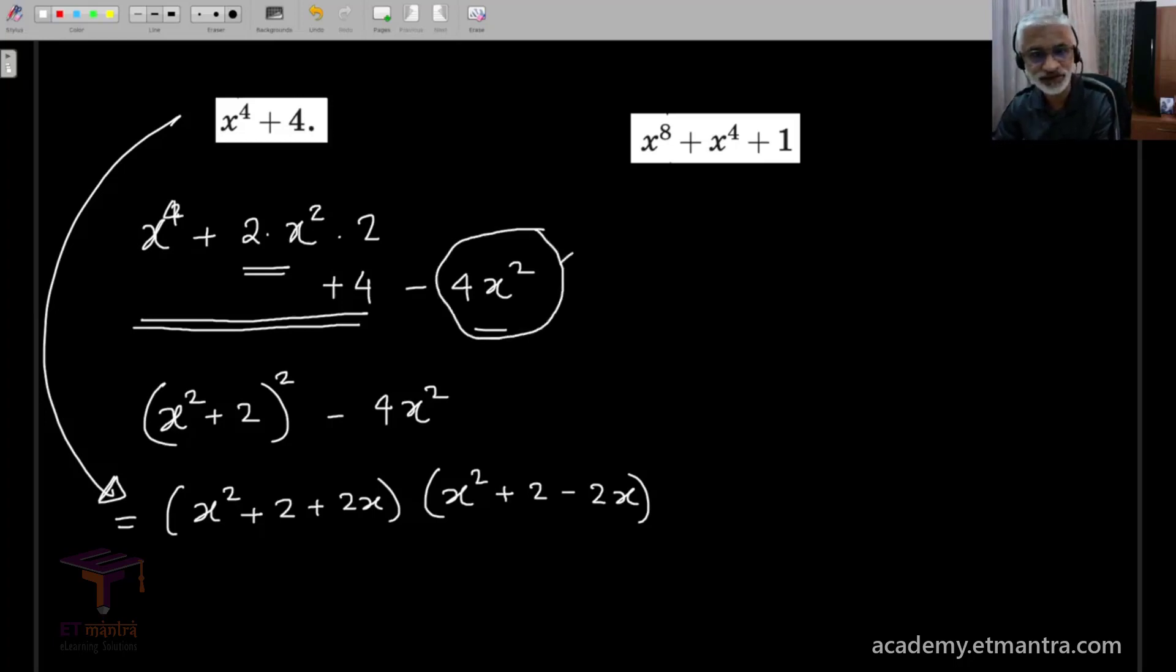And something similar will work out here. So, I have 1 plus, so make this 2x raised to 4 plus x raised to 8. So, this is again adding an additional term to make it a perfect square. Since you have added 1 x raised to 4 extra, you subtract the 1 x raised to 4.